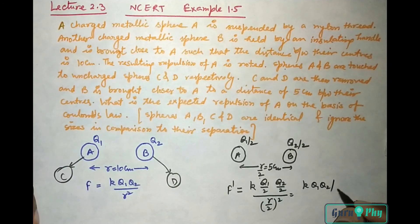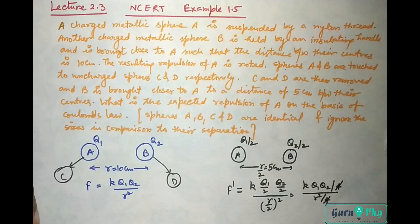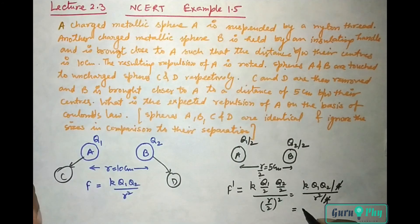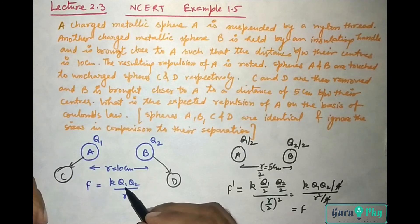This comes out to be K Q1 Q2 upon 4, upon R square by 4. Four and four cancel out, so K Q1 Q2 by R square. This is also K Q1 Q2 by R square.